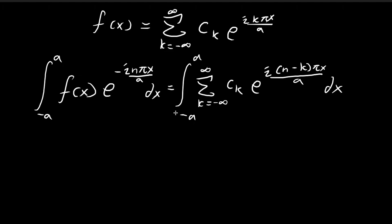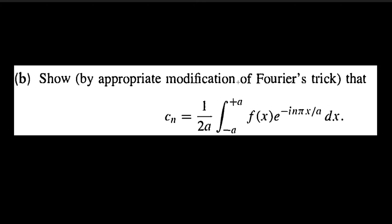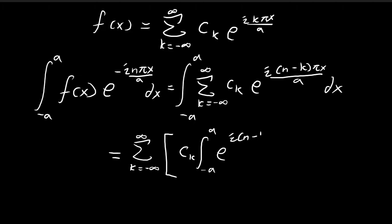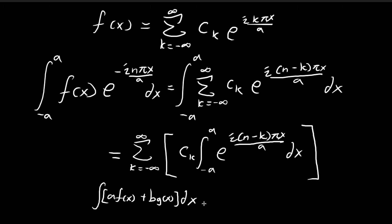Leaving the left-hand side alone for now, you can see that it is already exactly this integral we're trying to find — so we're already close to the solution. All we have to do is simplify the right-hand side. We pull the summation sign out, so the whole right-hand side can be rewritten as the sum of ck times this integral. This is simply one of the most basic integral operations — breaking up the integral over a sum.